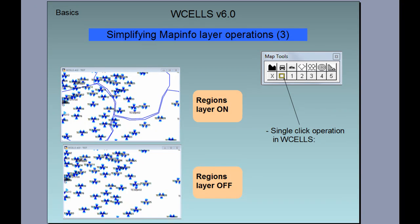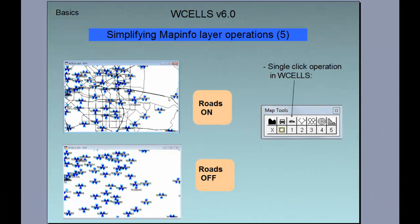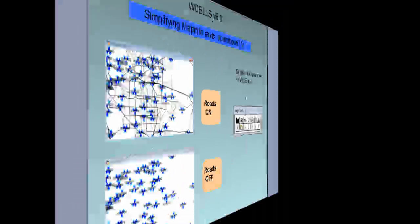You can display regions on or off. Similarly, you can do the same with drive routes, which is useful if you display the results of drive tests at the same time and want to compare if all your routes are driven. For roads, displaying roads on or switching them off from the map is also available.